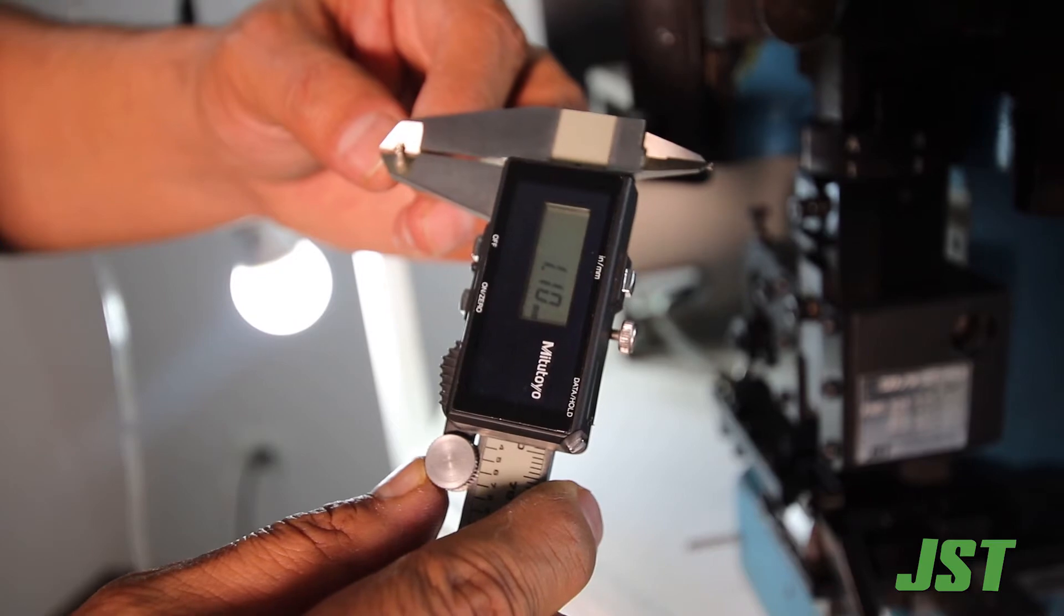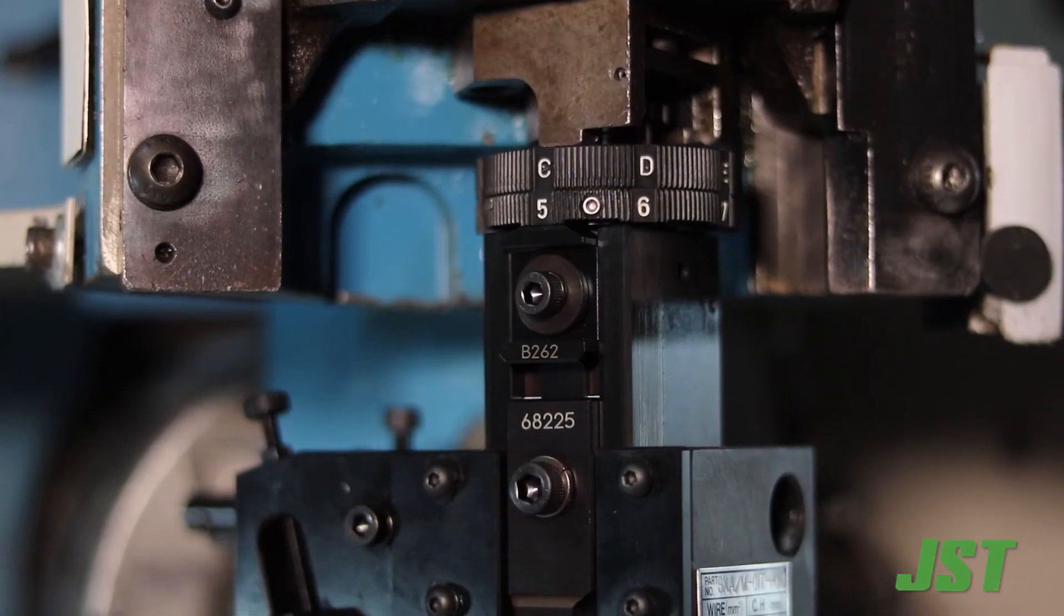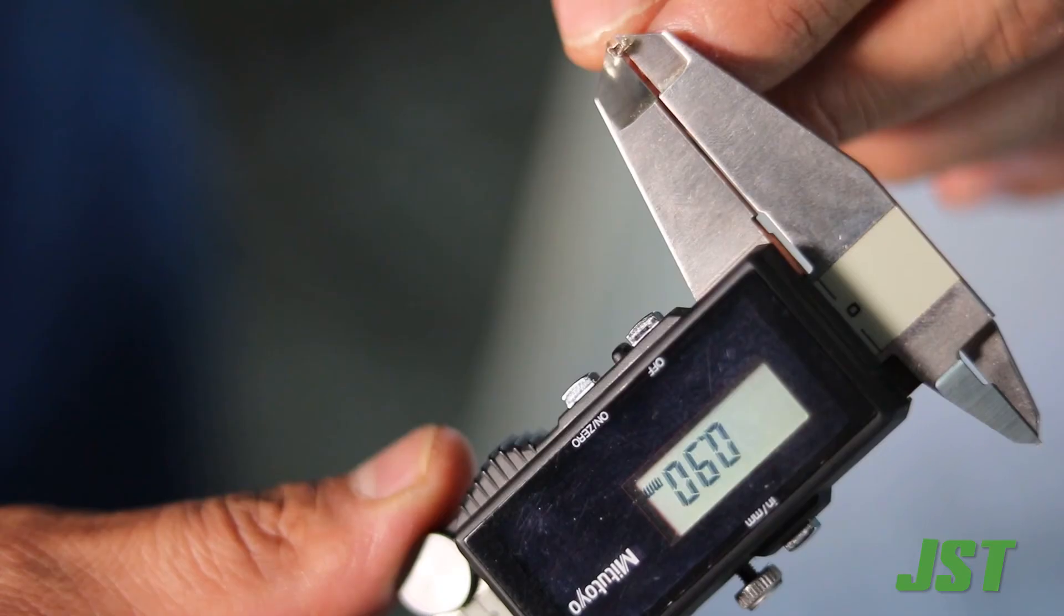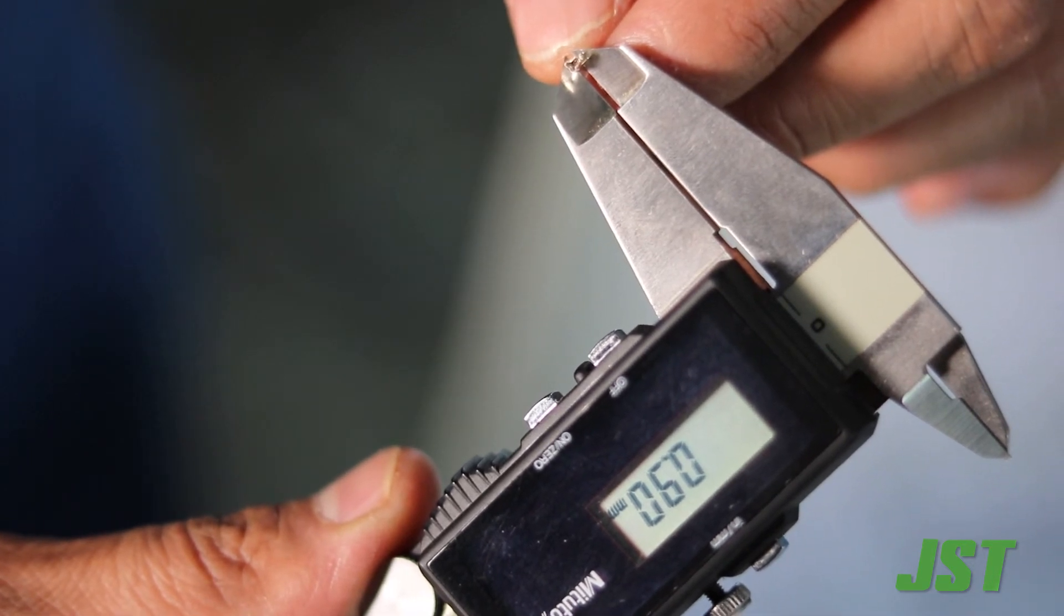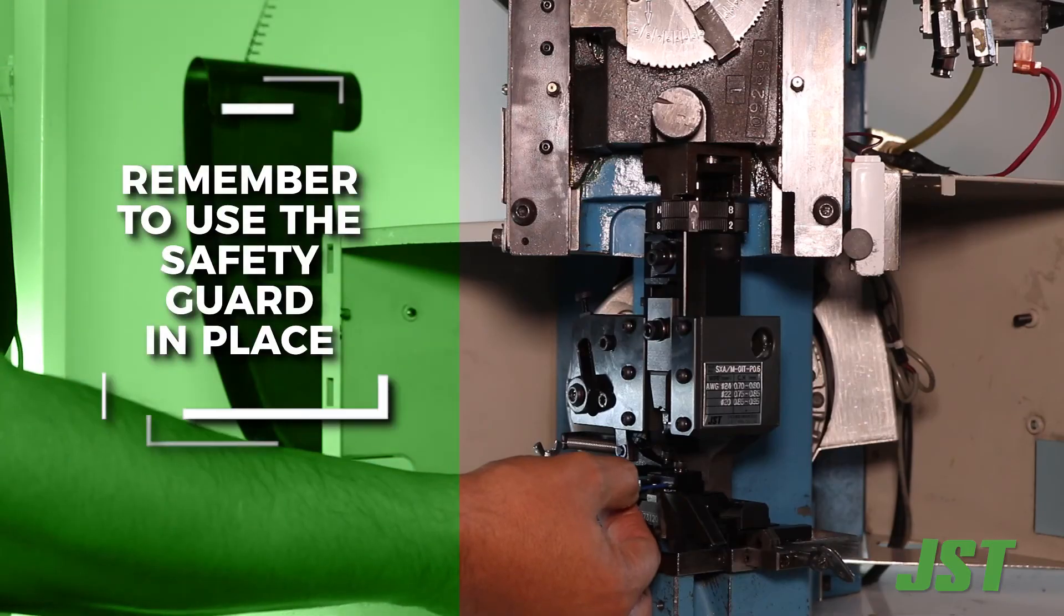Adjust the letters down and remeasure until the desired conductor crimp height is achieved.